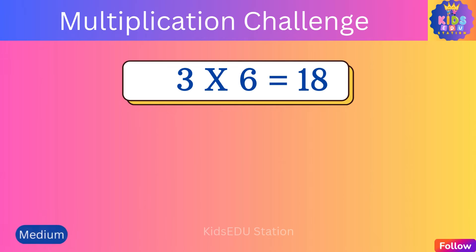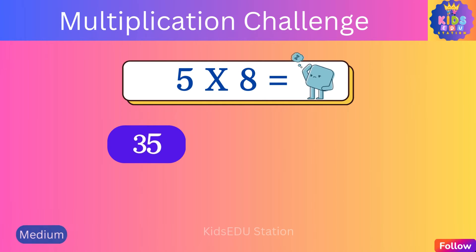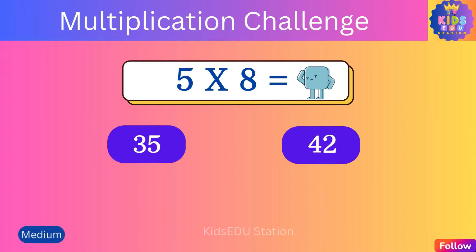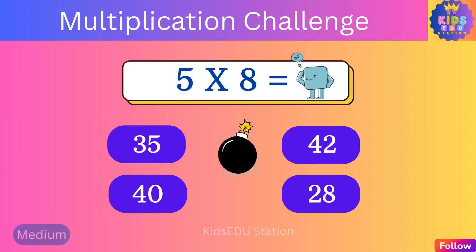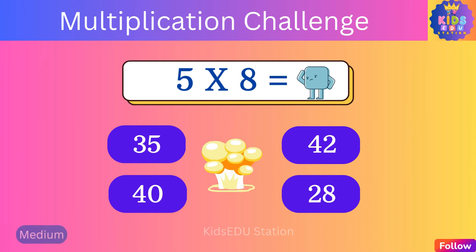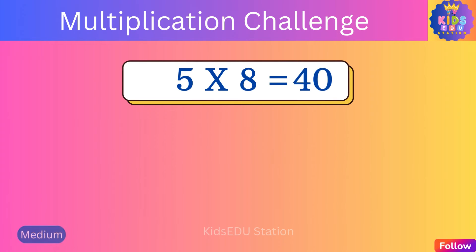Three times six is eighteen. What is five times eight? Thirty-five, forty-two, forty. Five times eight is forty.